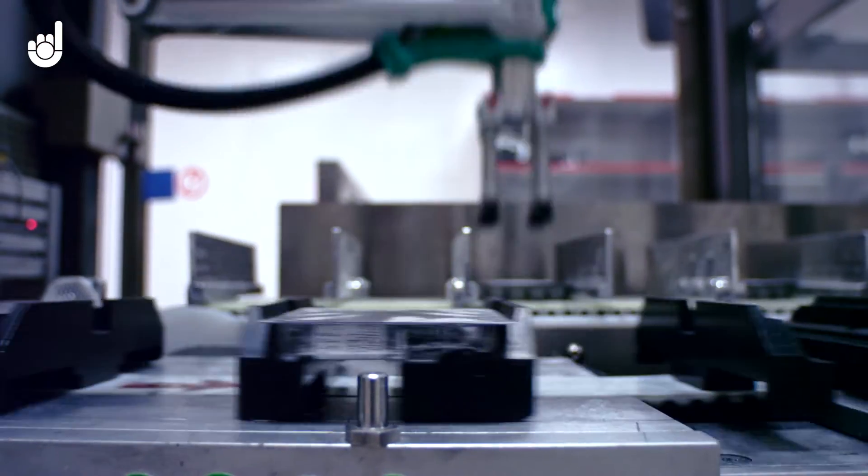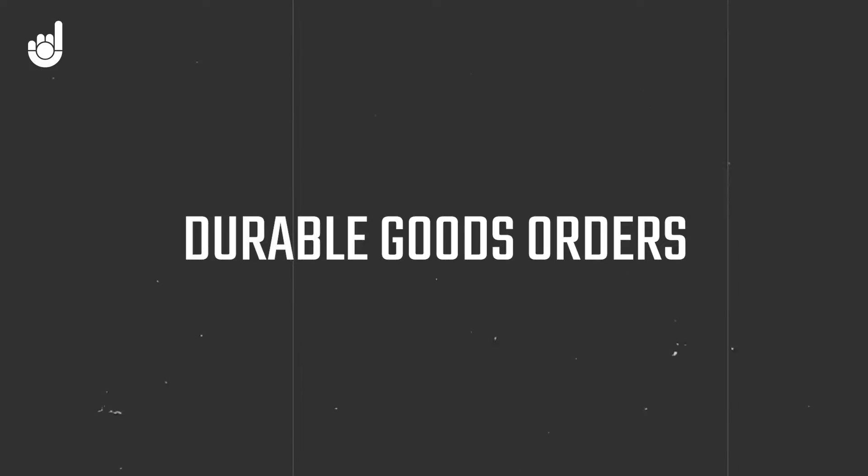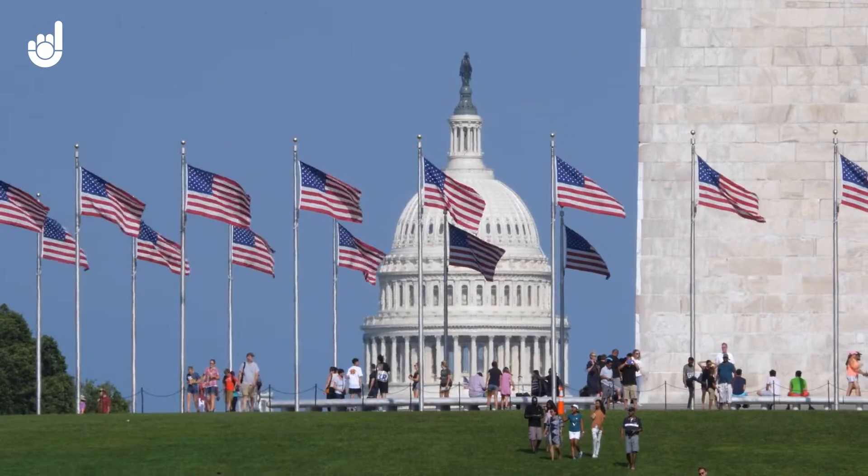Welcome back to our series where we're explaining all the economic data releases that you see in the monthly cycle, and how they relate to each other to better help you deal with them in the markets. This time we're taking a look at one of the big releases for the manufacturing sector, and that is Durable Goods Orders. We'll look at the US release, but the same principles largely apply for other economies as well.